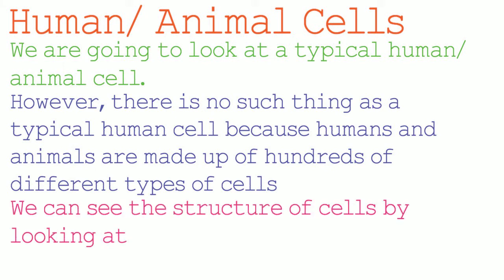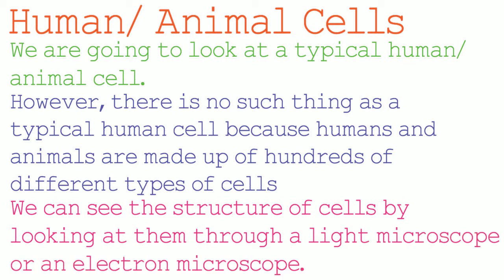We can see the structure of cells by looking at a cell through a microscope. However, we cannot use a normal microscope and instead have to use a light microscope or an electron microscope. So let's have a look at a typical cell.